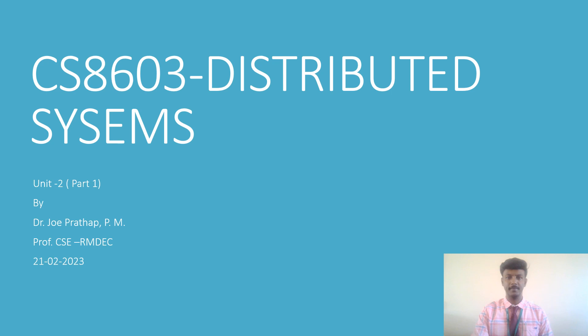Good morning students. Today we'll see some topics from Unit 2. We are handling the subject Distributed Systems. A distributed system is a collection of independent components located on different machines that share messages with each other in order to achieve common goals — a set of loosely coupled systems. When there is more than one system, communication happens by transferring messages. The order of message receipt is very important, so message ordering and group communication are the focus of this unit.